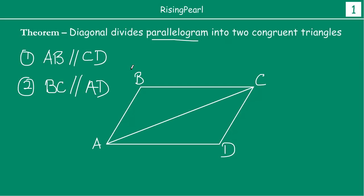So if we draw diagonal AC, then AC is a diagonal. Then we have got two triangles: triangle ABC and triangle ADC. The theorem is telling us that when you draw a diagonal in a parallelogram, these two triangles are congruent to each other. That is what we have to prove.